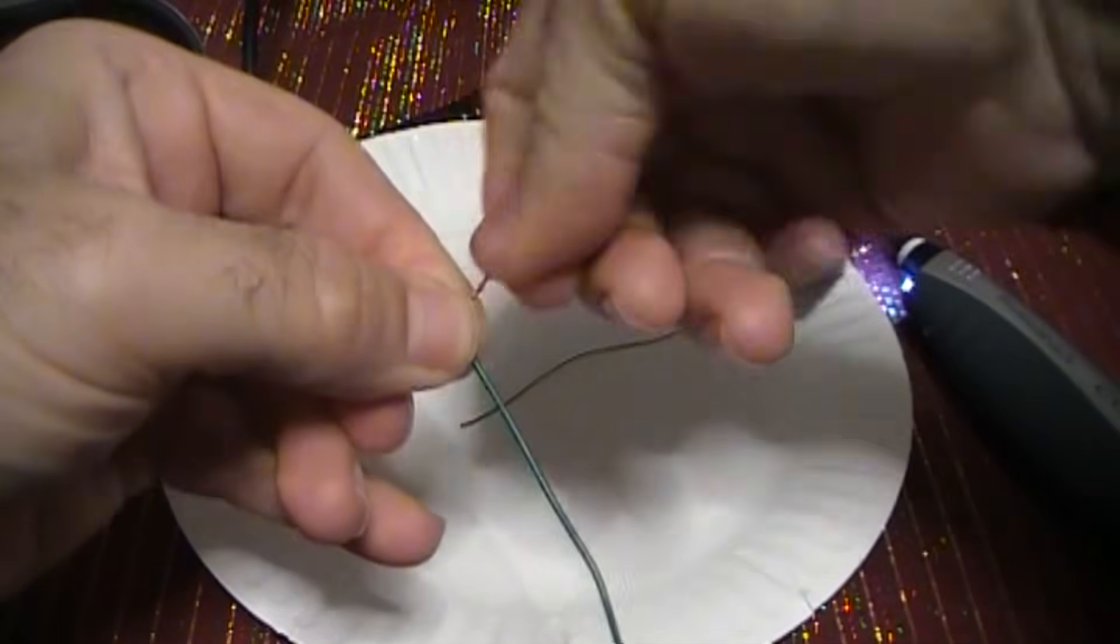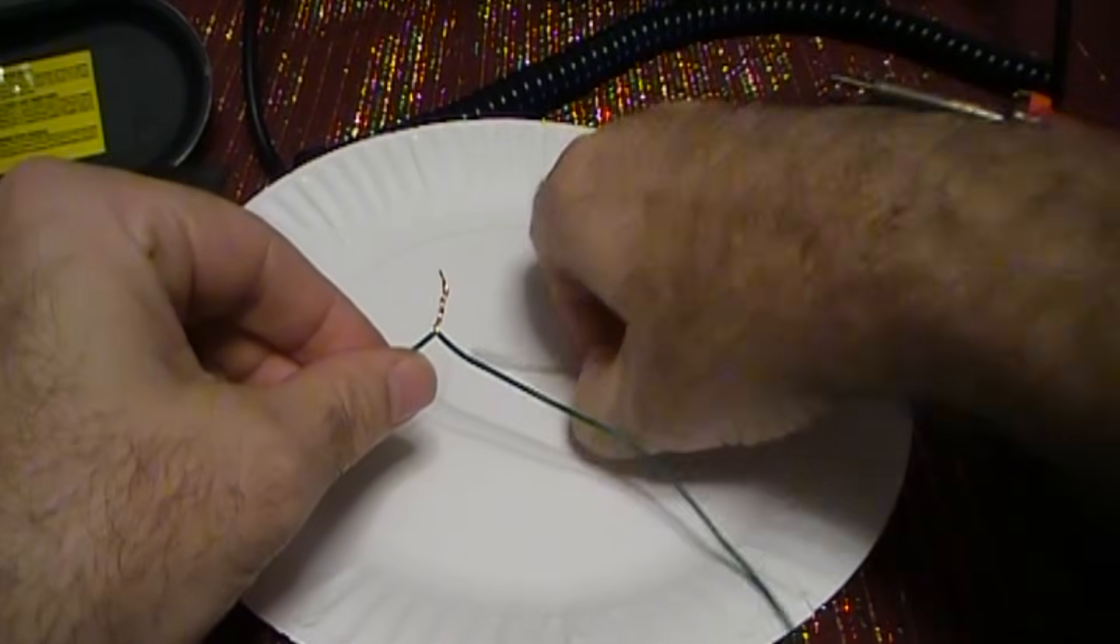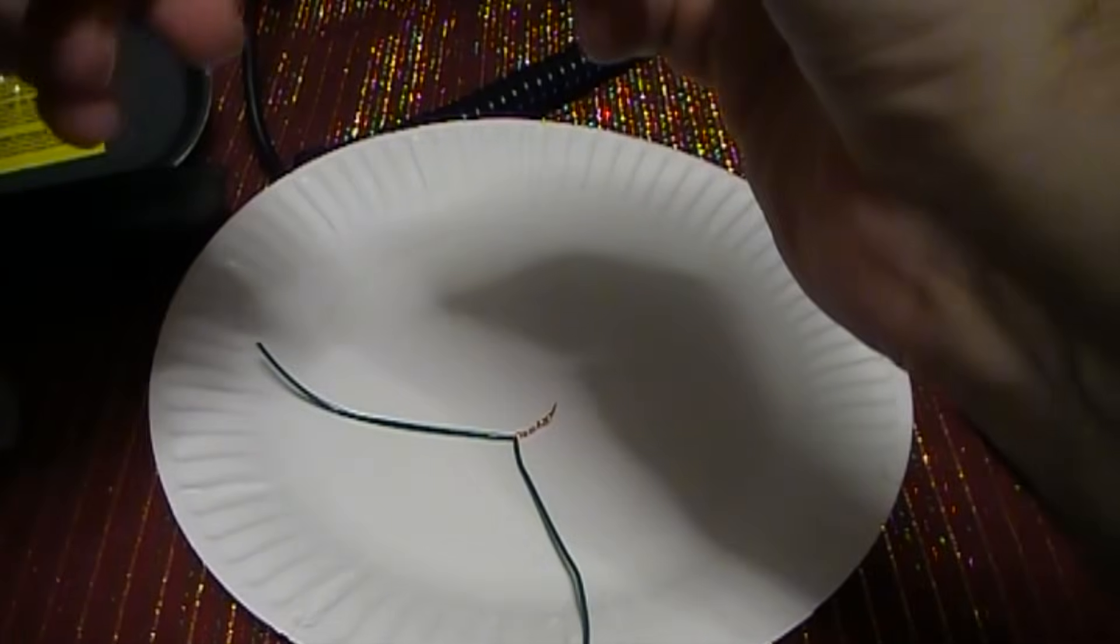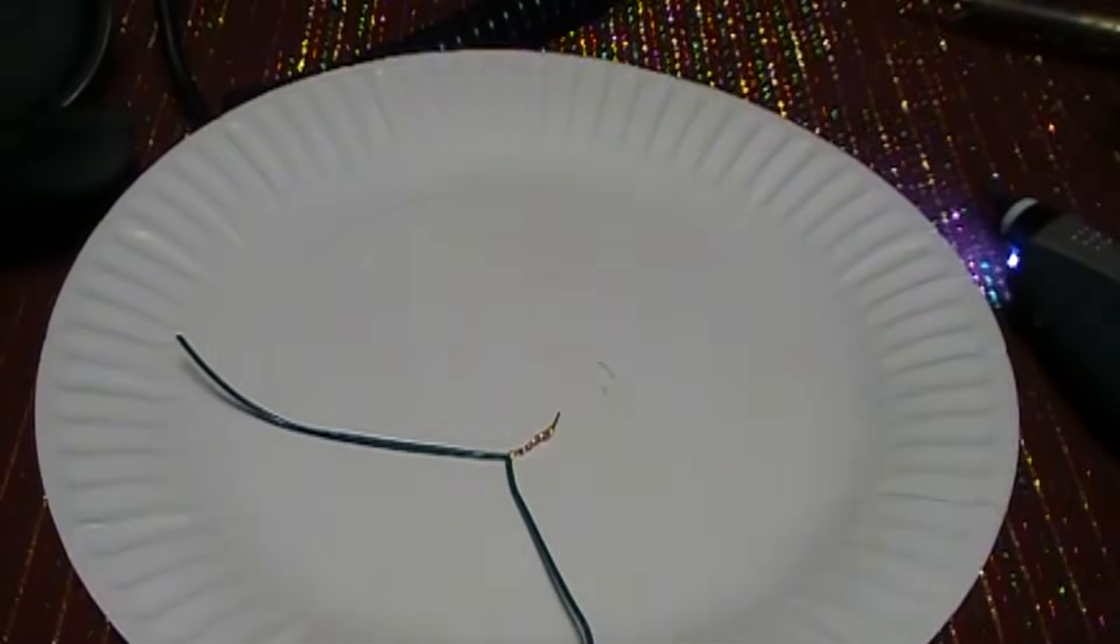So we're just going to twist these wires together. And then we're going to solder that. So let me zoom in a little bit tighter here.